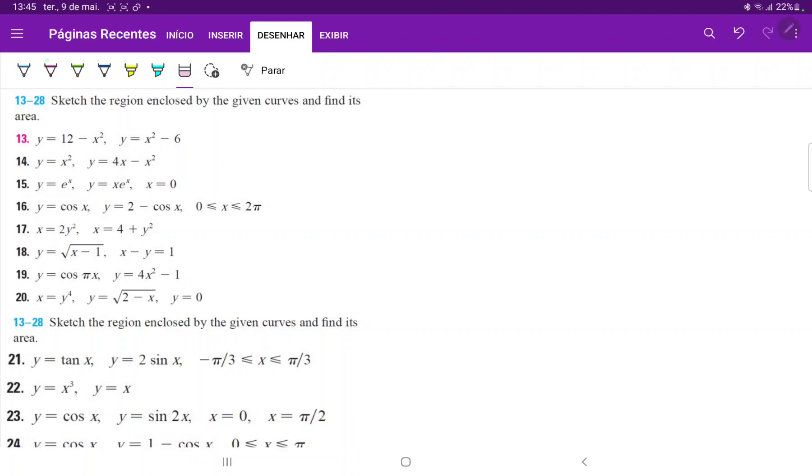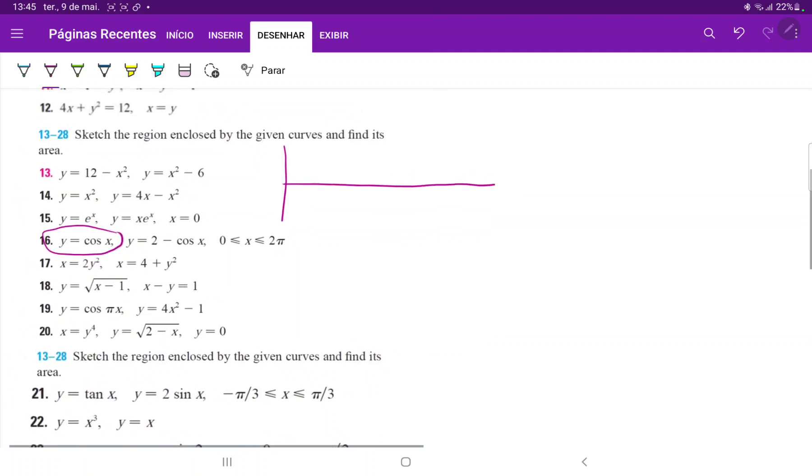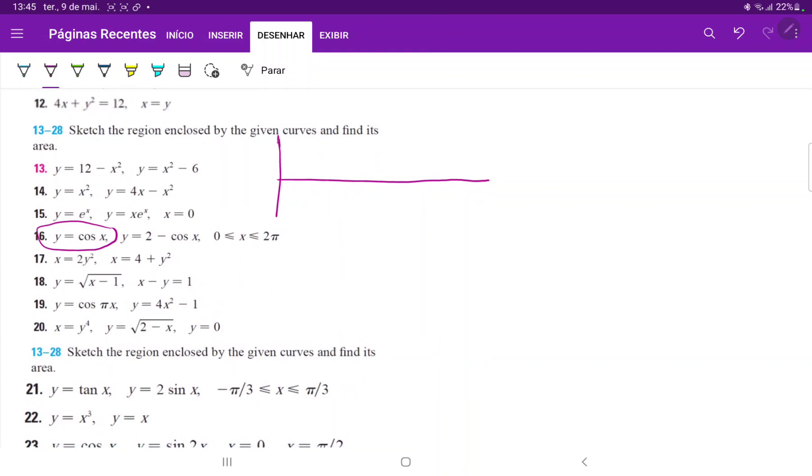So we will begin with drawing our cosine of x. Since it is between 0 to 2 pi, we only need from the positive side. So that is pi over 2, pi, 3 pi over 2, and 2 pi. It does begin at 1 and it goes to negative 1.